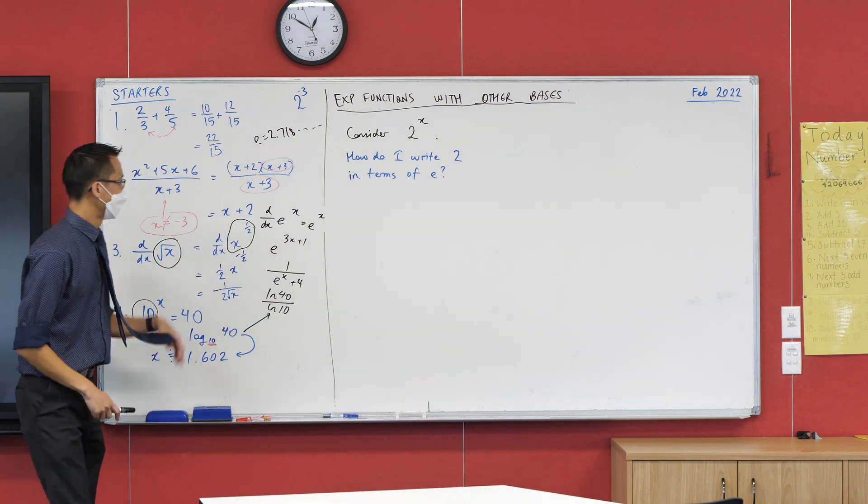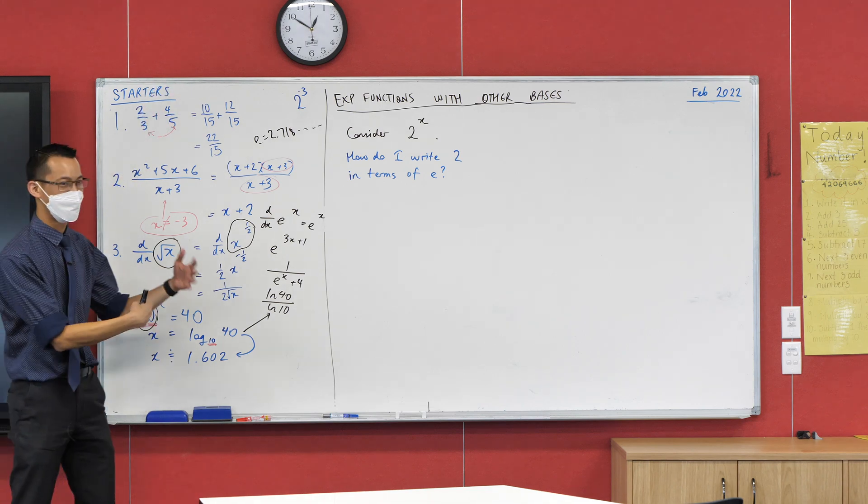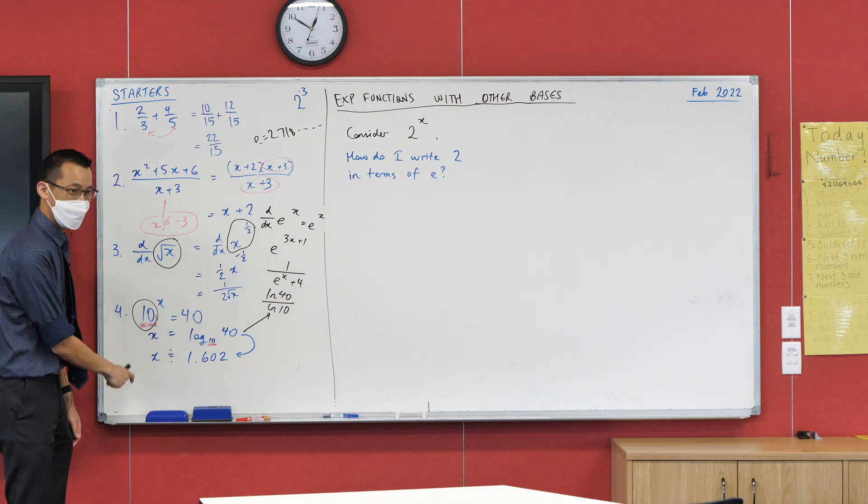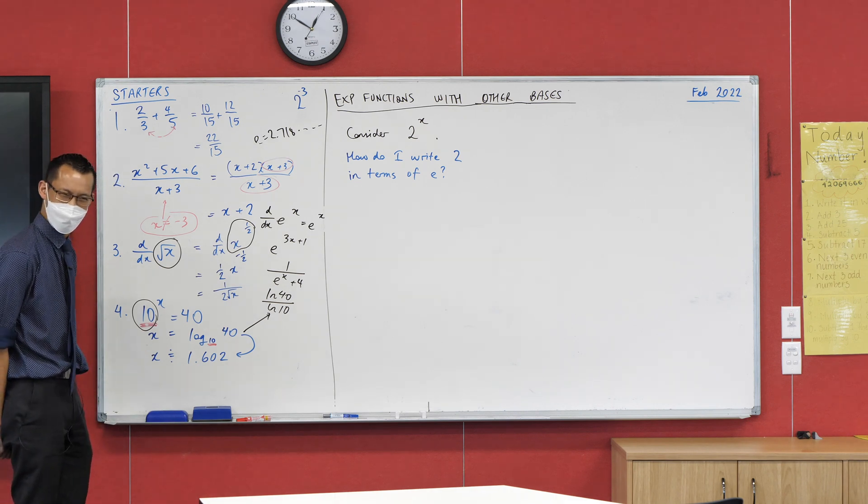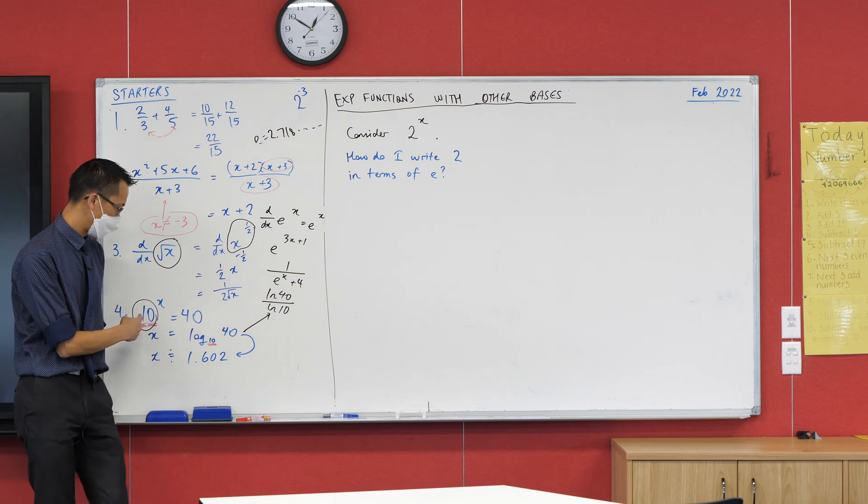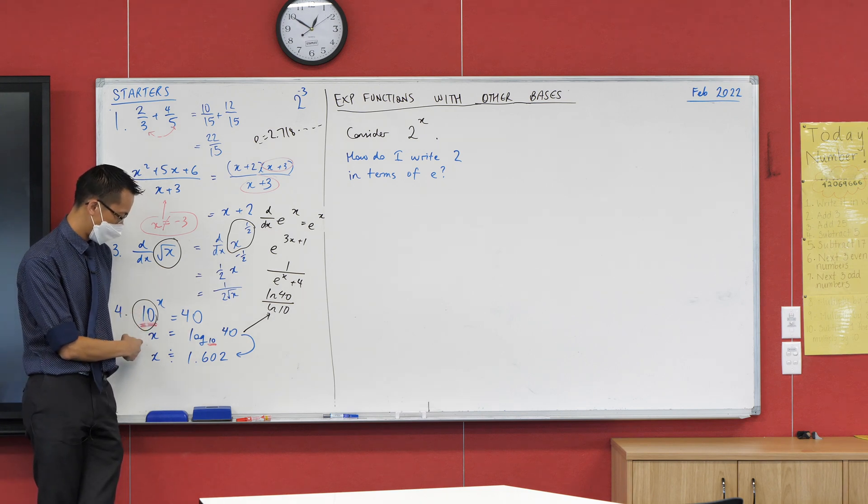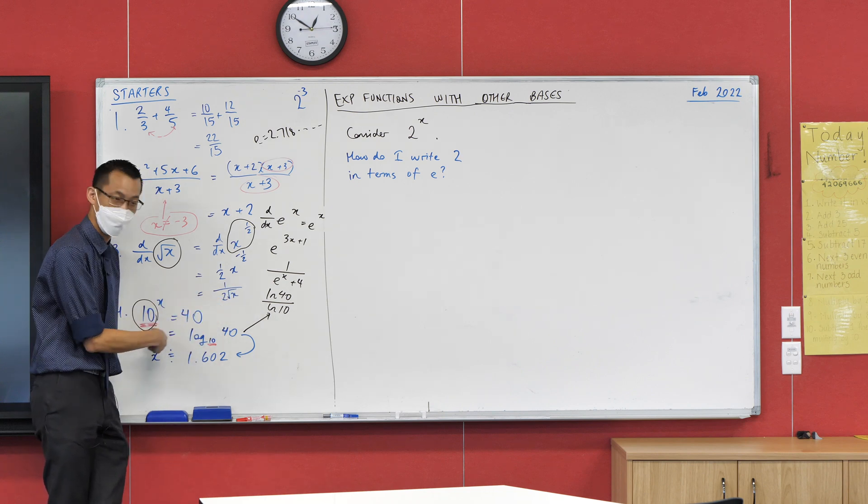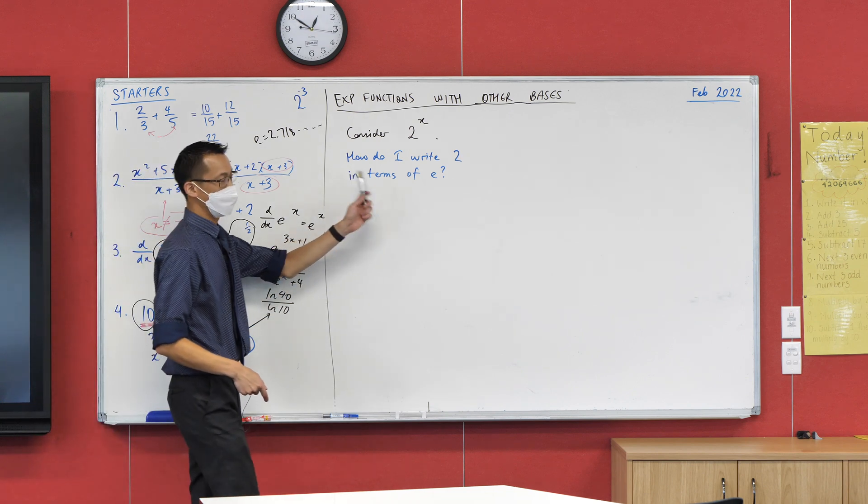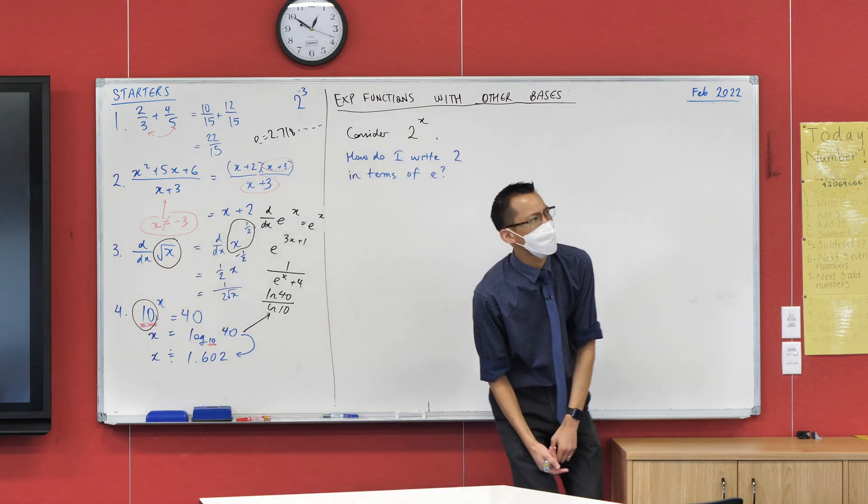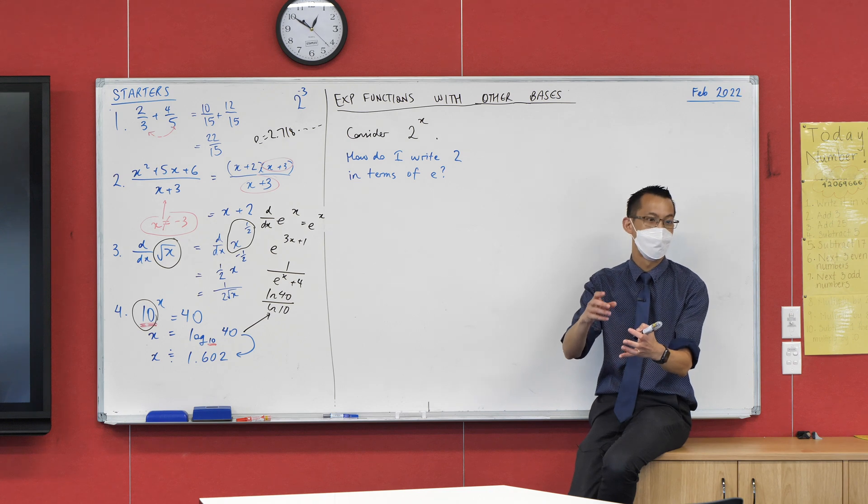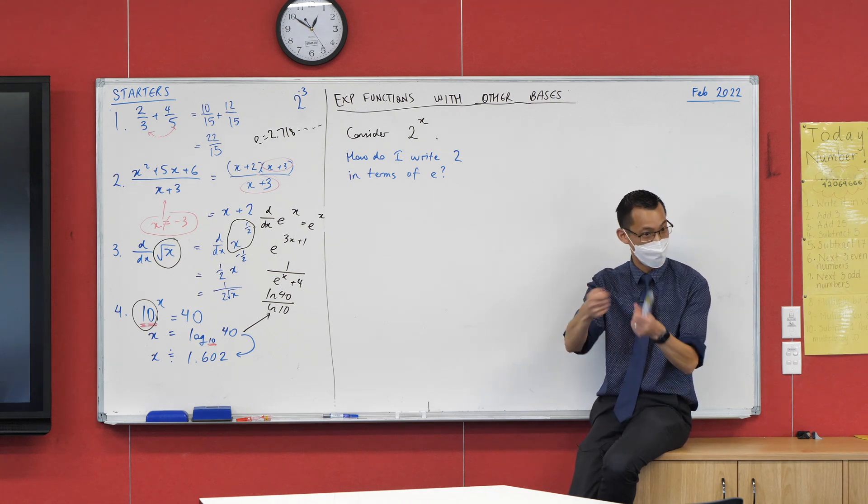Now, I gave you these three kind of to nudge you into thinking about how to rewrite questions. This is the last piece of the puzzle here. So do you see to get from here to here, you used logs, right? And then your calculator could handle it from there. We're going to do much the same thing here. If an exponential is like a lock, then a log is like the key, and vice versa.